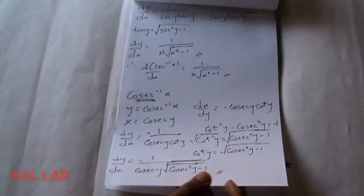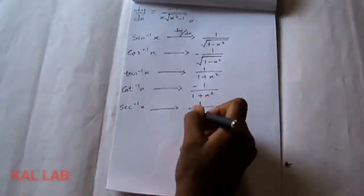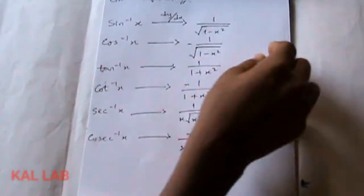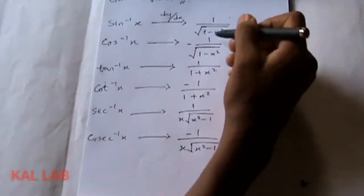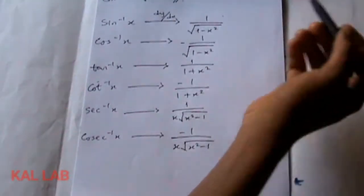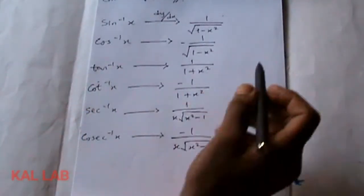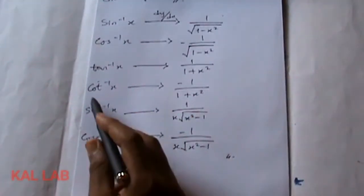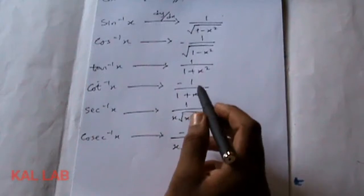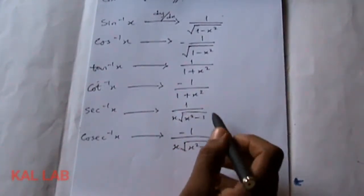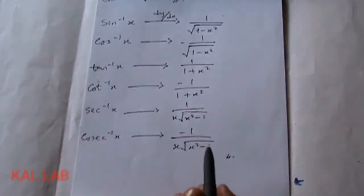To summarize: the derivative of sin⁻¹(x) is 1/√(1 − x²); the derivative of cos⁻¹(x) is −1/√(1 − x²); the derivative of tan⁻¹(x) is 1/(1 + x²); the derivative of cot⁻¹(x) is −1/(1 + x²); the derivative of sec⁻¹(x) is 1/(x√(x² − 1)); and the derivative of cosec⁻¹(x) is −1/(x√(x² − 1)).